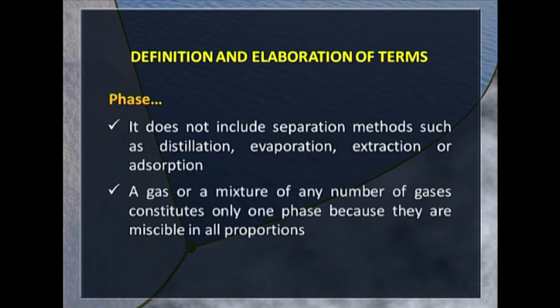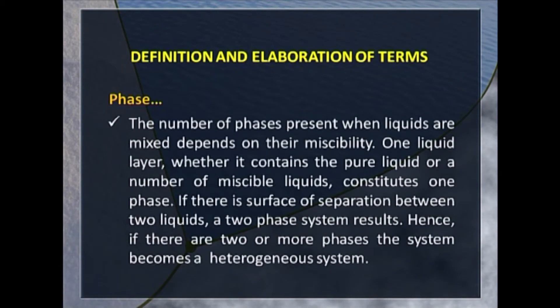A gas or a mixture of many gases will constitute only one phase because gases are miscible in all proportions. The number of phases present when liquids are mixed depends on their miscibility. If you have only one liquid, it is a one-phase system, or if you mix a number of liquids which form only one layer, then it also constitutes one phase.